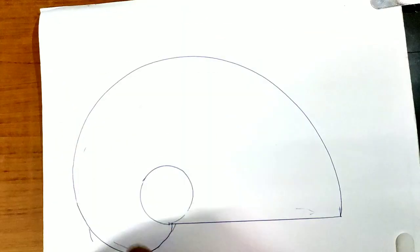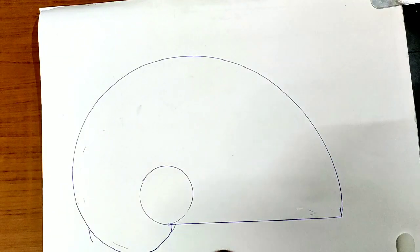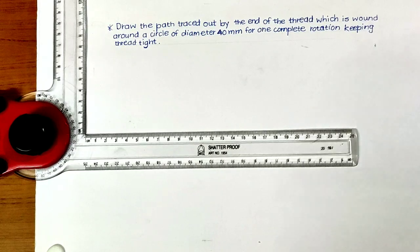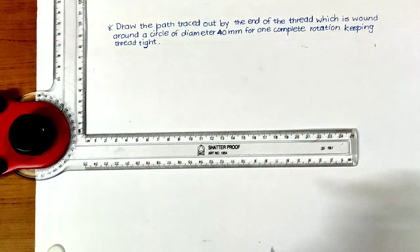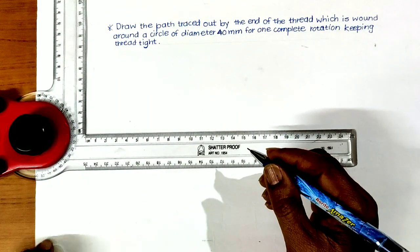This is the involute of a circle. Just now we have seen the concept how involute is generated. But graphically how it is to be drawn, let us see.